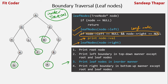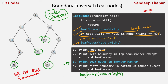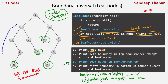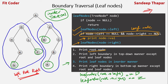Then we go to the right subtree. This is a standard in-order traversal: left, root, right. Since the root has already been printed, the leaf node function is called twice — once for the left subtree rooted at D, and once for the right subtree rooted at Z — to avoid duplicate printing of the root.